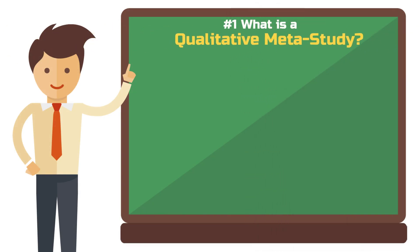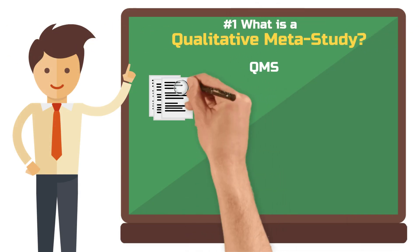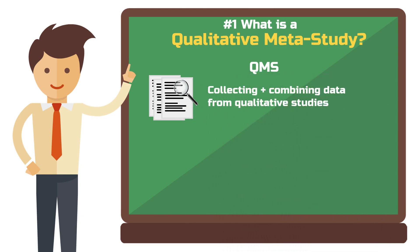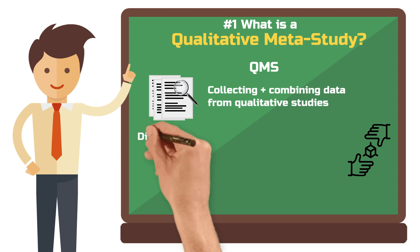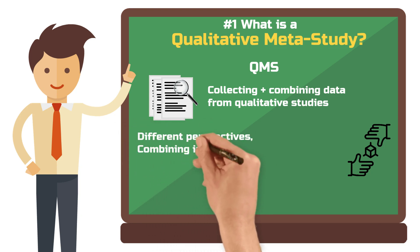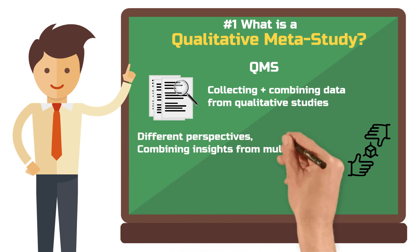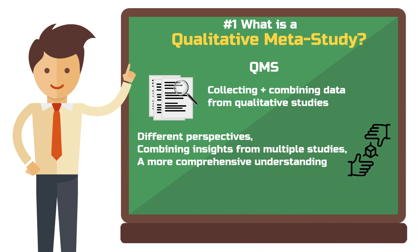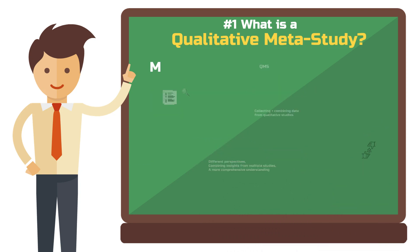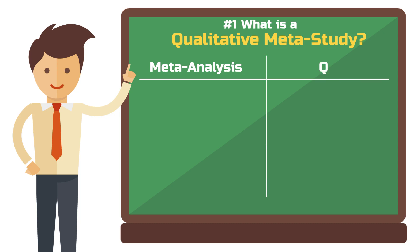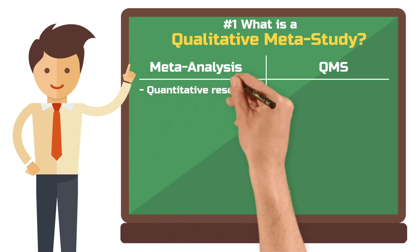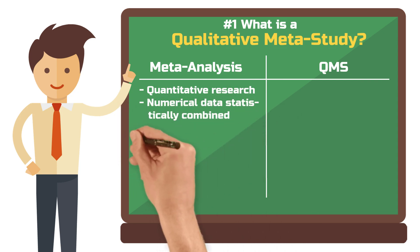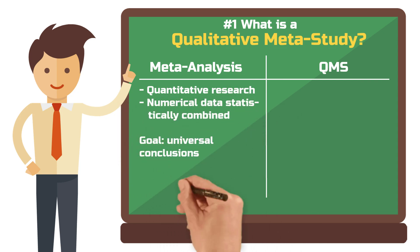A qualitative meta-study is a method for combining data from multiple qualitative studies on a specific topic. While a single study often provides only one perspective, a qualitative meta-study allows you to integrate findings from numerous studies, offering a more comprehensive and nuanced understanding. Meta-analyses are well established in quantitative research, where they statistically combine numerical data from various studies to draw universal conclusions.